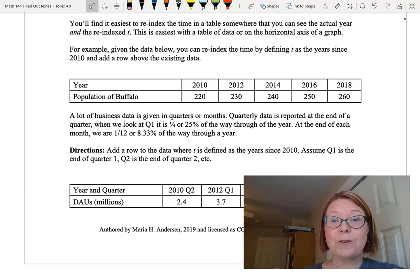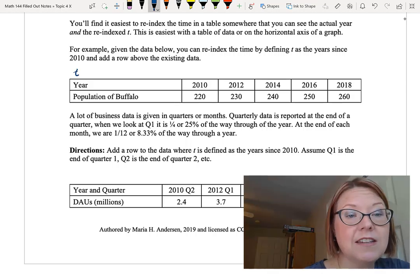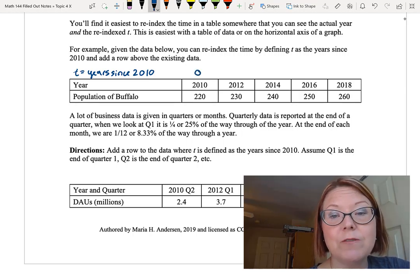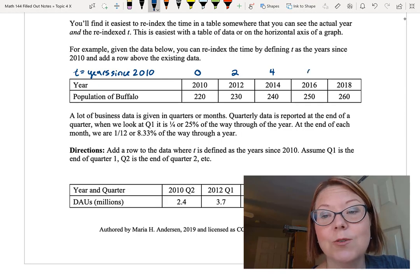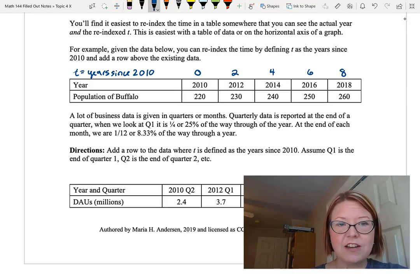We often re-index the time in real-world scenarios, and the easiest place to do that is either around your table of data where you have the year or the month written down or on the graph on the actual horizontal axis of the graph. It is really important that you write down what your re-indexing scheme is. For example, in the data below, we're going to re-index the time by defining t as the years since 2010 by just adding a row above the existing data. Here's what the data table says. In the top row, we have year, 2010, 2012, 2014, 2016, 2018, counting by every two years. In the second row, we have the population of buffalo, 220, 230, 240, 250, 260. Remember that the population was increasing by five every year, so that's 10 every two years. To re-index our time, I'm going to add a row above the years row. T equals years since 2010. So 2010 is going to be year 0, 2012, year 2, 2014, year 4, 2016, year 6, and 2018, year 8.